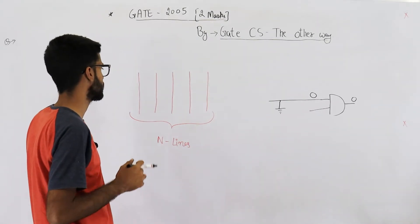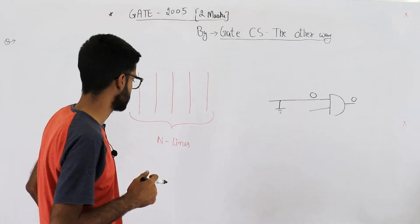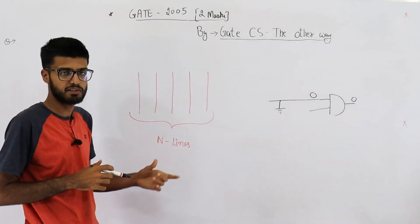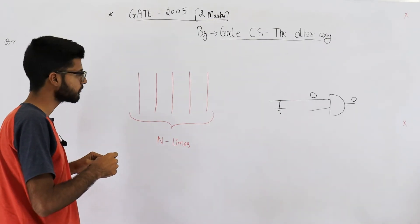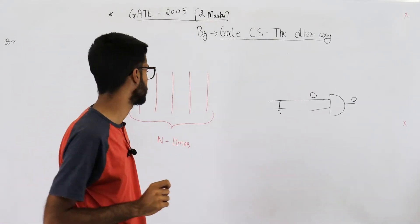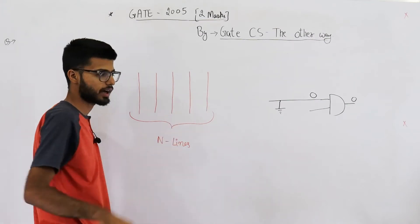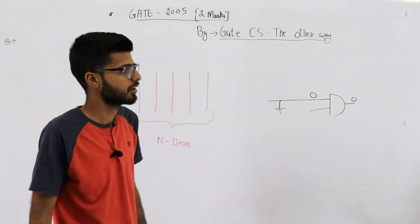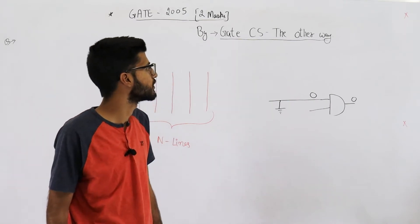And similarly we have a fault named stuck-at-one. So they're talking about a circuit in which we have a total of N lines, and they're saying how many multiple stuck-at faults are possible. That means each of these N lines could have a fault. Now you might make a mistake in solving such questions because